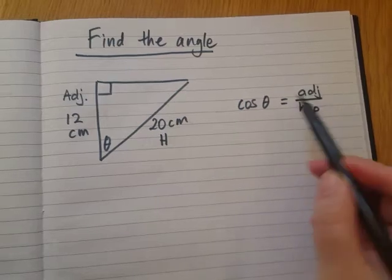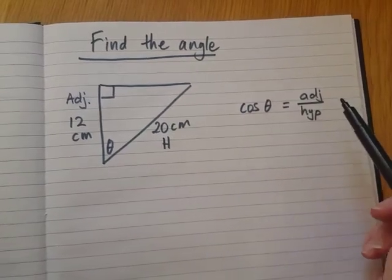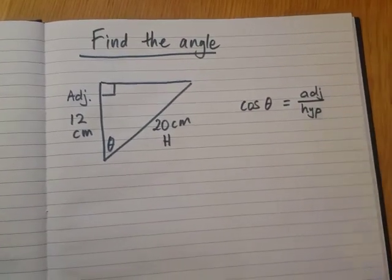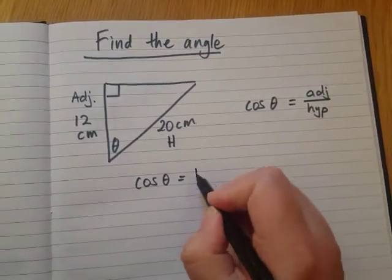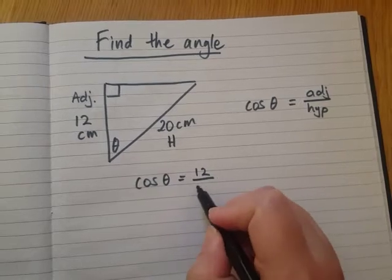But you can just call it cos if you want to. So cos theta the angle equals adjacent over hypotenuse. So let's use this formula. We're going to put the numbers 12 and 20 into this fraction here. Let's write it down. Cos angle equals 12 over 20.